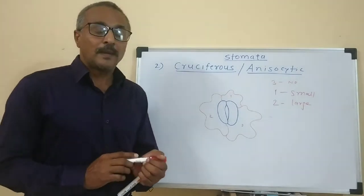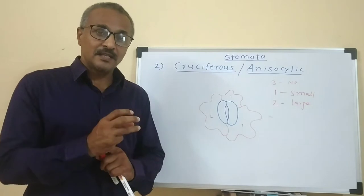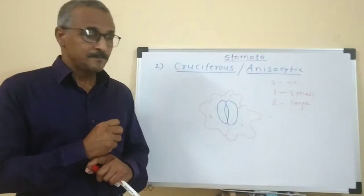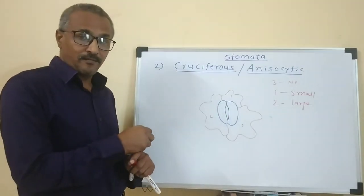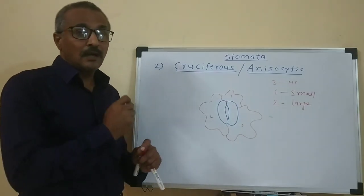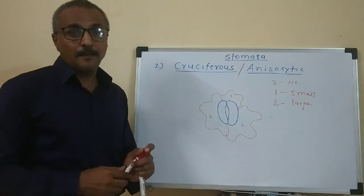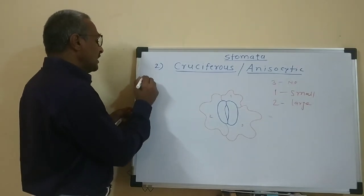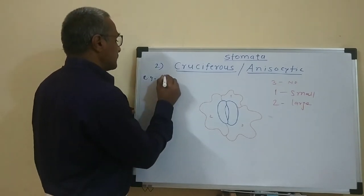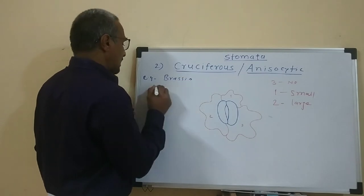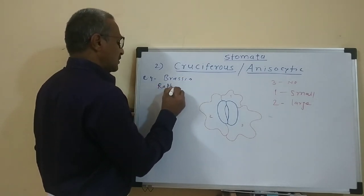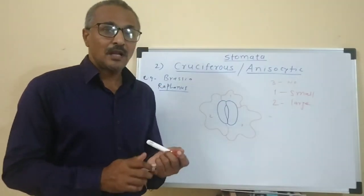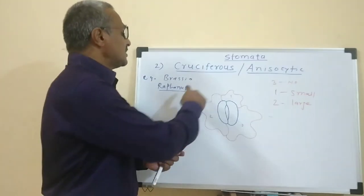This is the anisocytic arrangement of the subsidiary cells in the stomata. It is called the cruciferous or anisocytic stomata. These stomata are found in plants of Cruciferae — that is, in Brassica and related plants. This is called the cruciferous type of stomata, found in all plants that belong to Cruciferae.